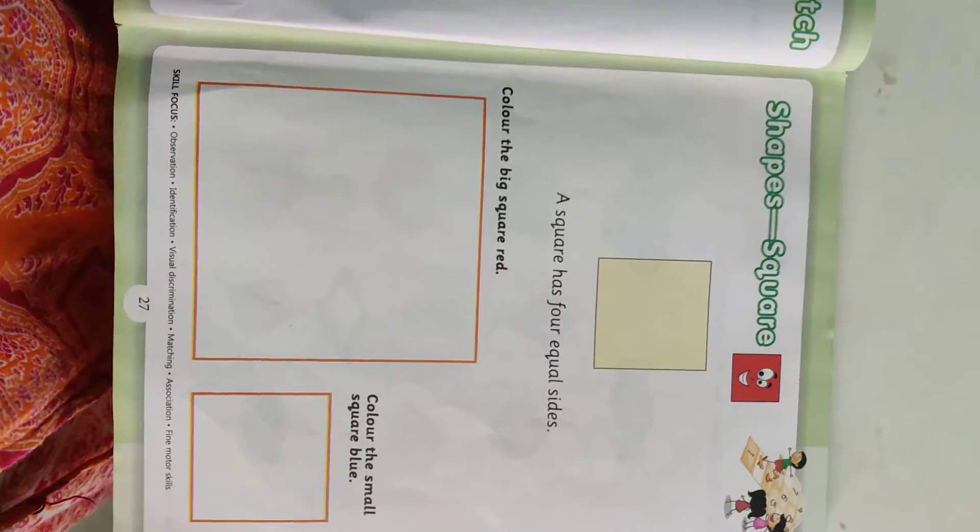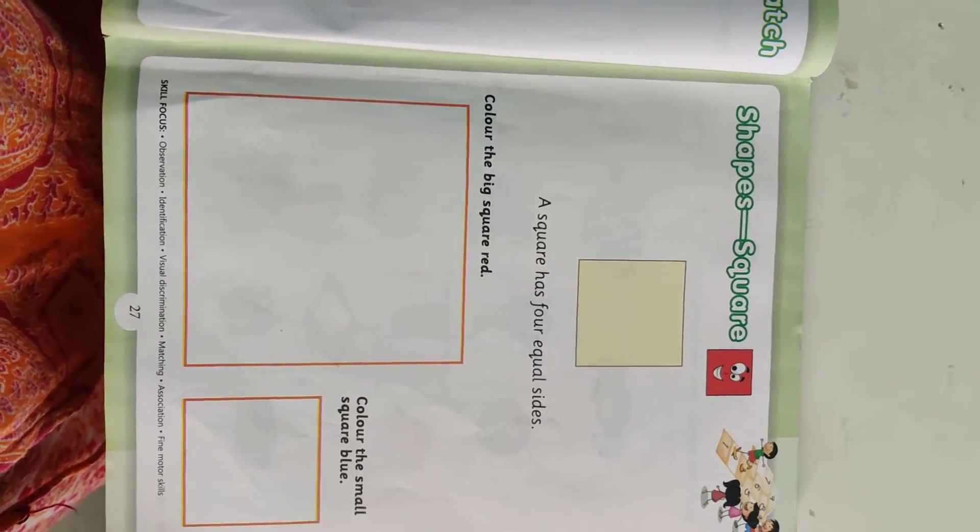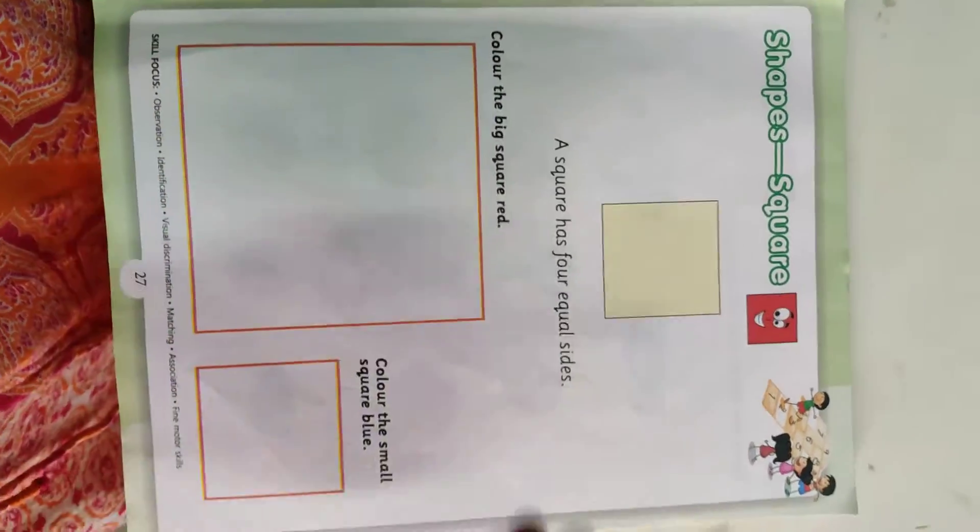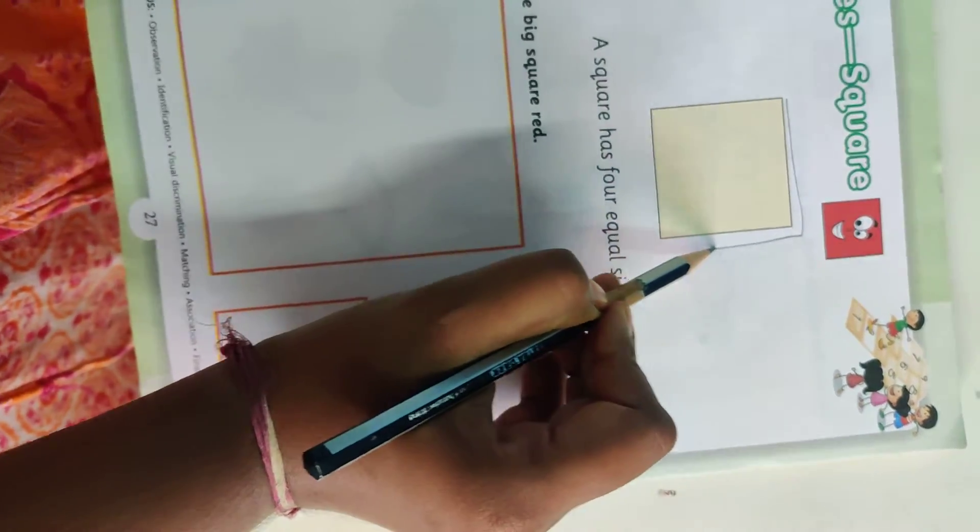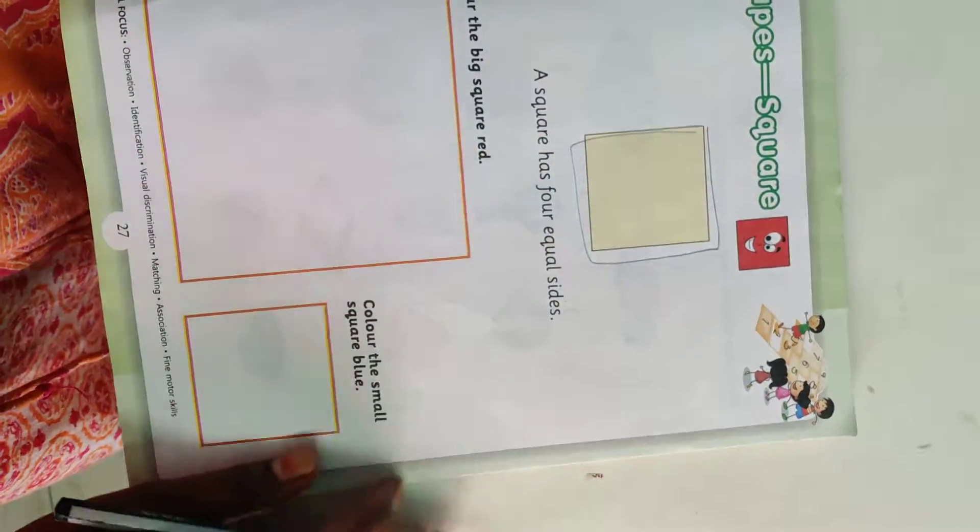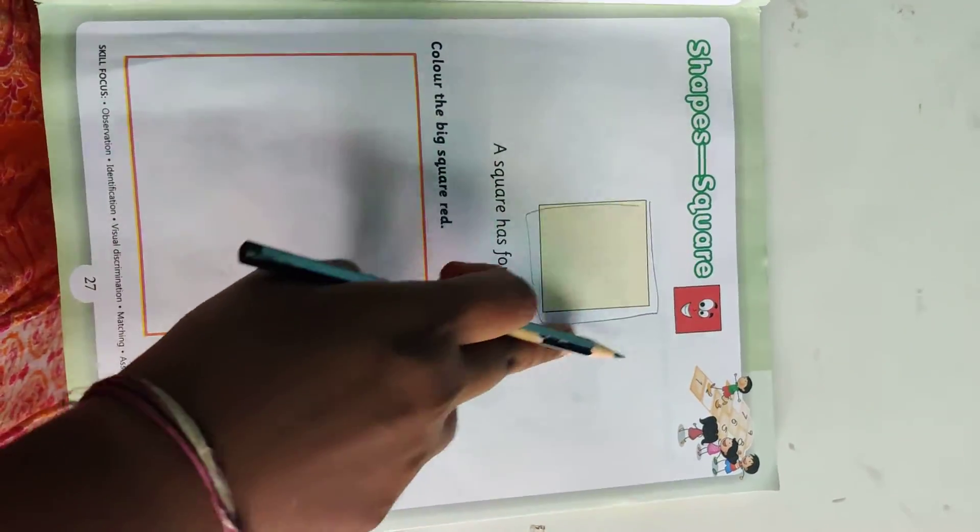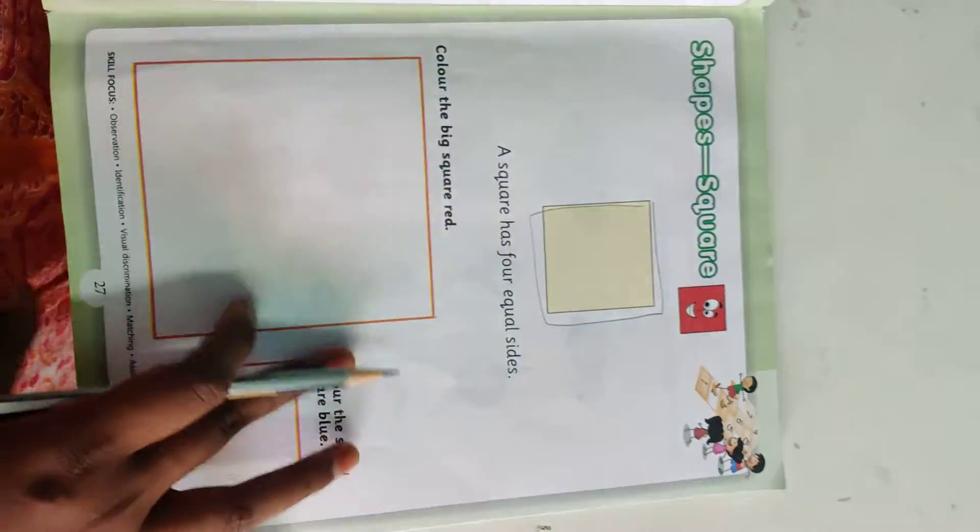And now, we are going to see shapes. What is the first shapes? Square. So this is a square. Square has four equal sides, right? Square has four equal sides. That is, square onthi nalu side hume equala arukko.